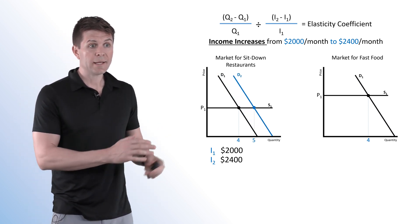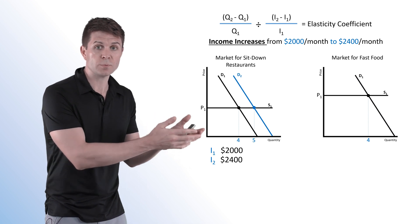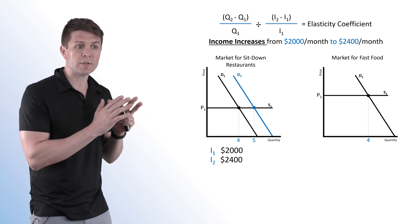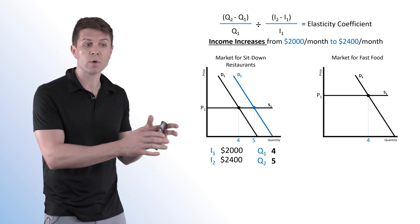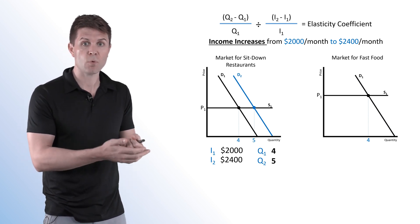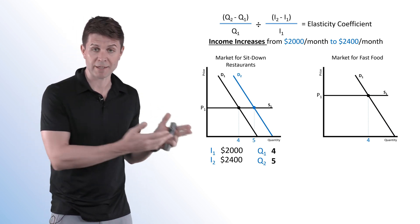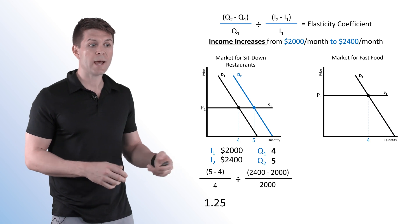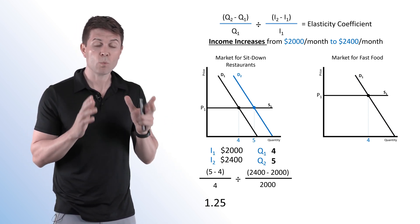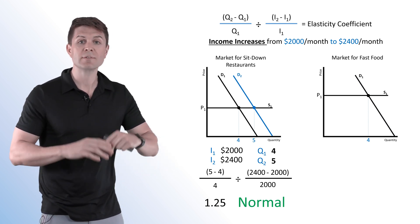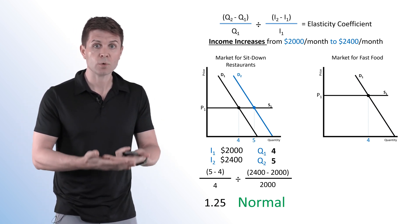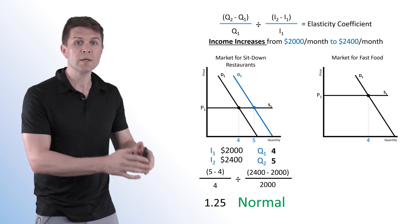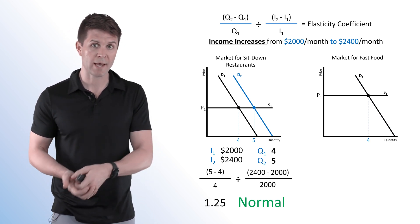We have our I1 and I2. Because of the income increase, we see demand shifting right. With a perfectly elastic supply curve, the quantity demanded increases from 4 to 5. When we throw this into the formula, we end up with a coefficient of 1.25. This means we have a normal good — income goes up, quantity demanded increases. A positive coefficient means it's a normal good; we buy more of it when we have more money.